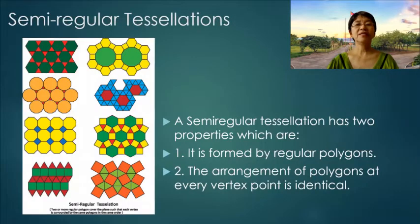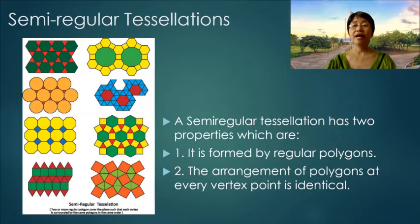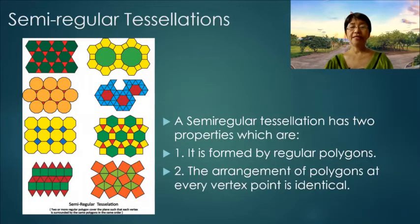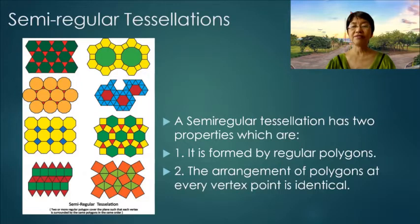Semi-regular tessellations. A semi-regular tessellation has two properties which are: number one, it is formed by regular polygons, and number two, the arrangement of polygons at every vertex point is identical. And we have eight semi-regular tessellations.